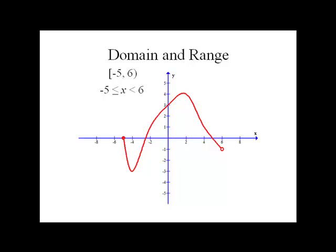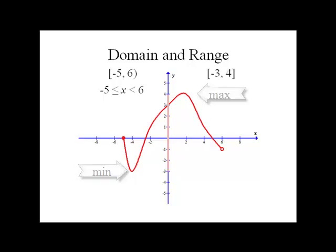Now we'll do the range, which are all the possible outputs. Notice the endpoints are included, but those aren't the same endpoints as our domain. Our range goes from our minimum value to our maximum value, which in this case is negative three to four, and both of those are included, so both get brackets.